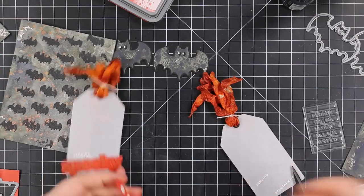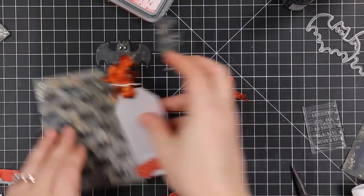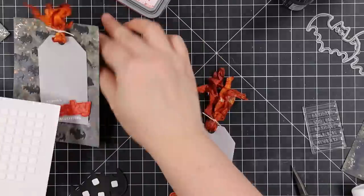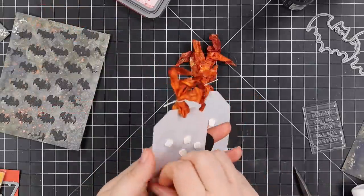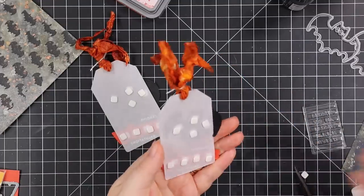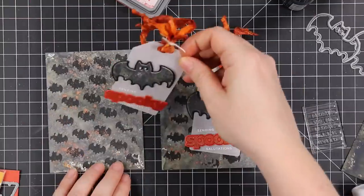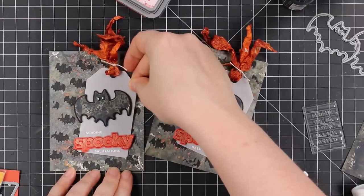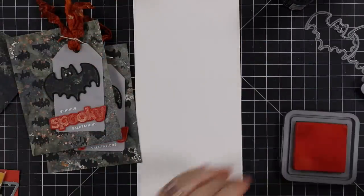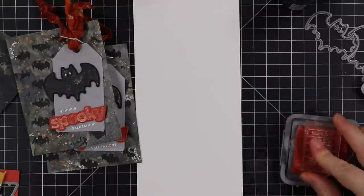Then I attached my little bats as well with thin foam squares, gives them a little bit of dimension. Then I put foam squares on the back of the tags behind those elements so that it doesn't show through the tags, and then pressed those into place onto these backgrounds. My card bases are going to be top folding A2 white notecards, so four and a quarter by five and a half.